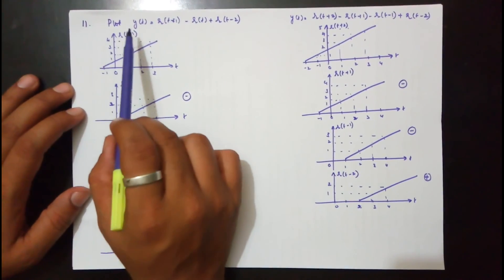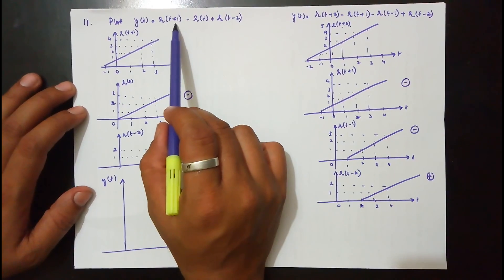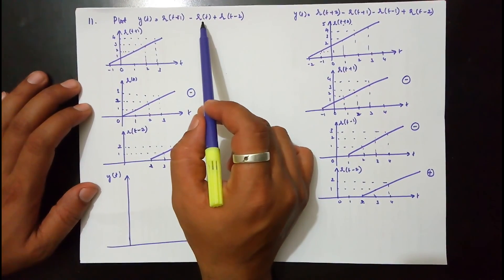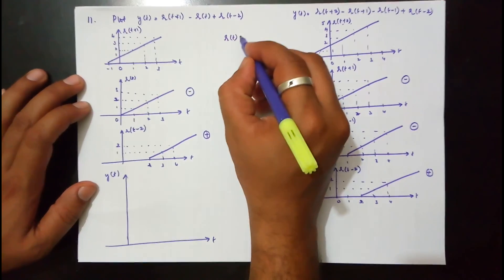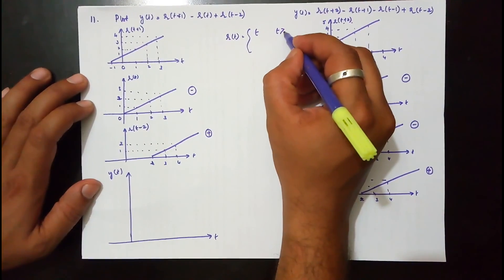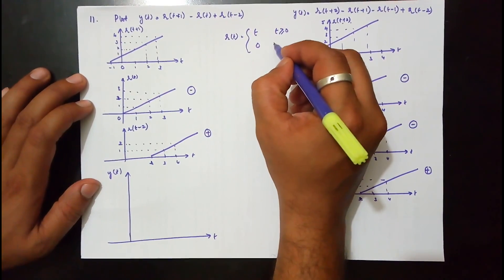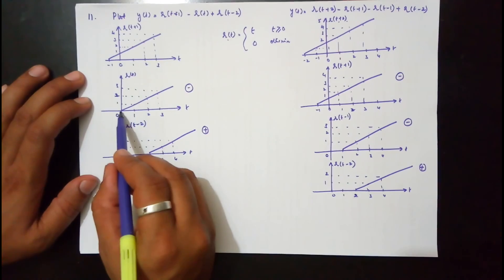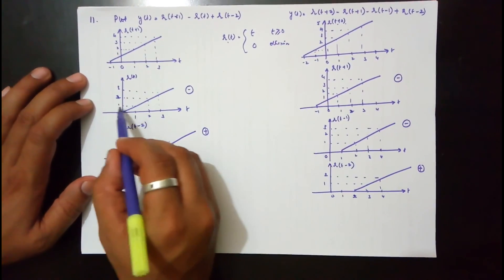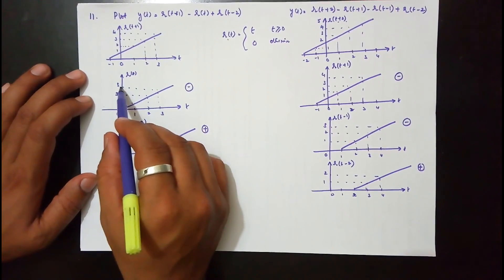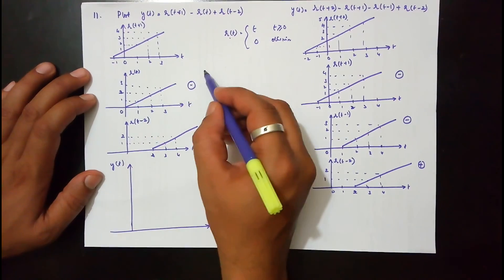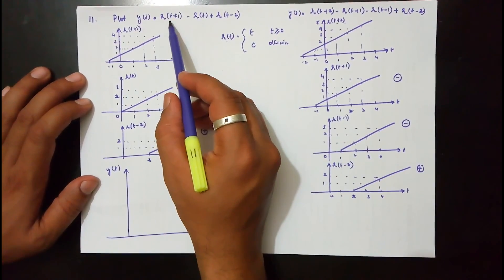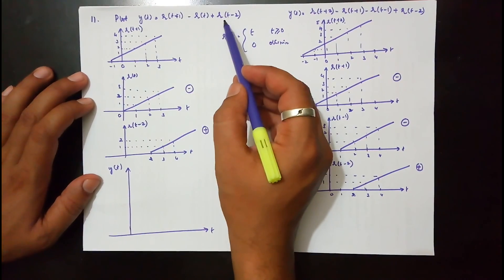In this problem, you are asked to plot y(t) = r(t+1) − r(t) + r(t−2), where r(t) refers to a ramp. r(t) = t for t ≥ 0 and 0 otherwise. So r(t) starts at 0, reaches amplitude 1 at t=1, 2 at t=2, 3 at t=3, and so on — giving a straight line ramp. I have drawn r(t+1) — that is shifting left of r(t) by 1 — and r(t−2), which is shifting right of r(t) by 2.